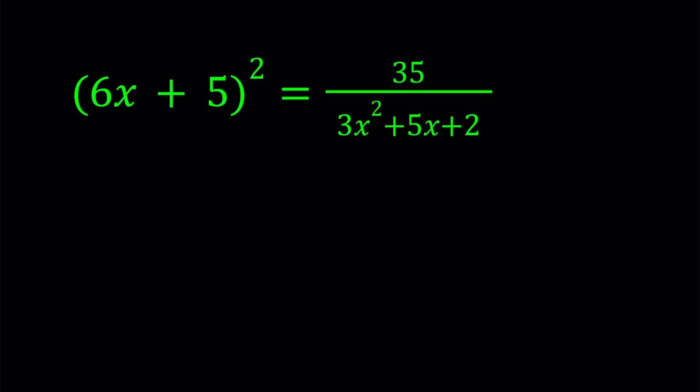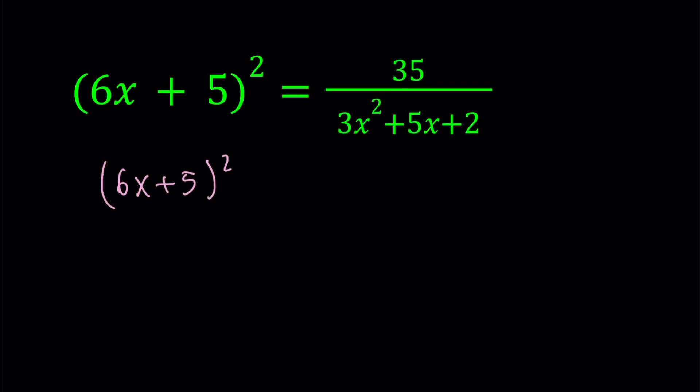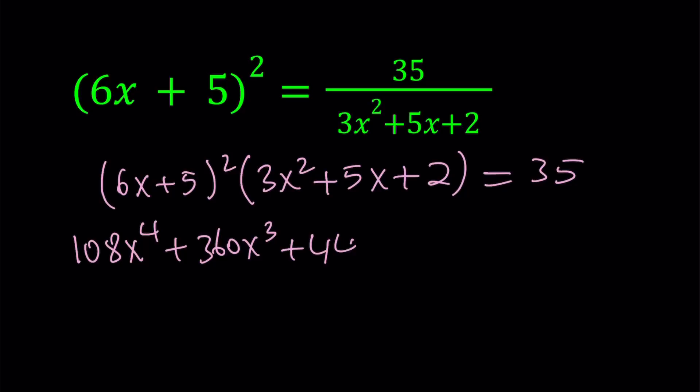Originally it was a polynomial and to be able to solve this problem we're going to turn this into a polynomial. So you're going to see the original version as well. Let's go ahead and cross-multiply. That gives us 6x plus 5 quantity squared multiply by 3x squared plus 5x plus 2 equals 35. Now if you expand all of this and multiply together, you're going to get 108x to the fourth power. When you distribute the whole thing, you're going to get the following, which is a quartic equation.